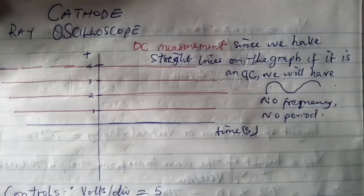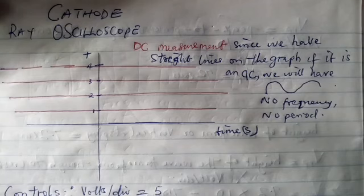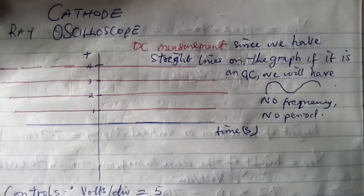I also want you to know that cathode ray oscilloscope is also an electrical instrument which can be used to show the measurement and analysis of a waveform. It measures voltage and time signals.